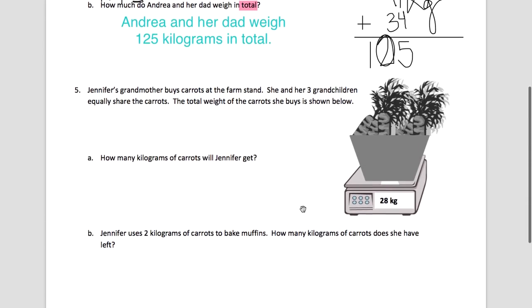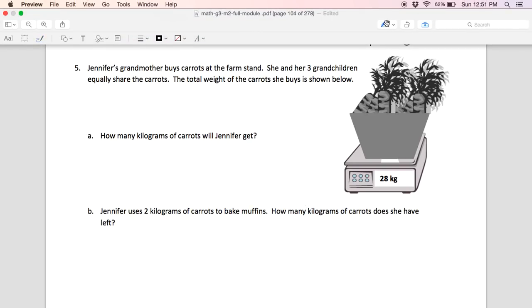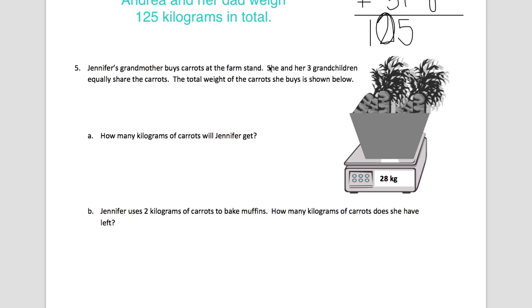Number five. Jennifer's grandmother buys carrots at the farm stand. She and her three grandchildren equally share the carrots. So let's take a minute and look at that. We know she, the grandmother, and her three children equally share the carrots. And in total, there are 28 kilograms of carrots.